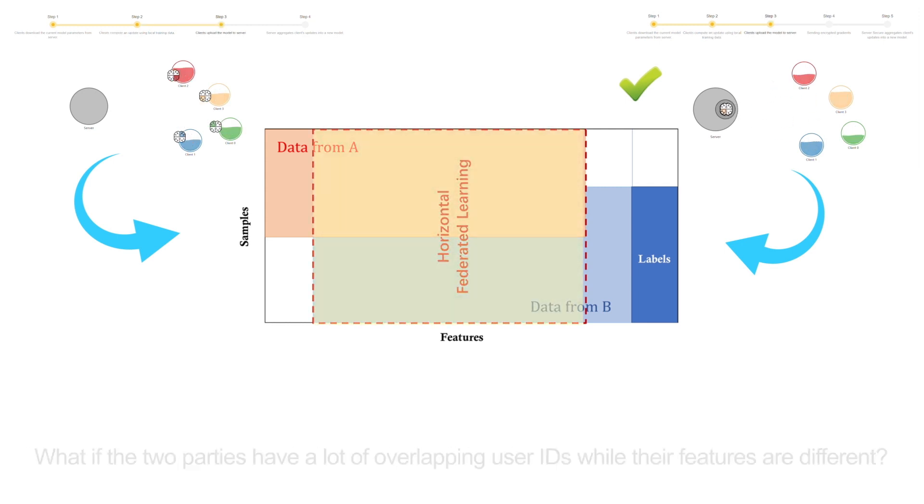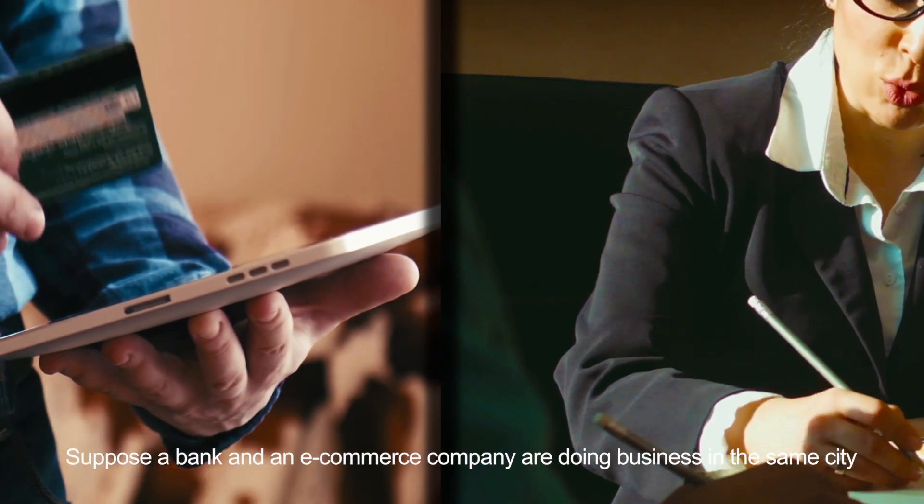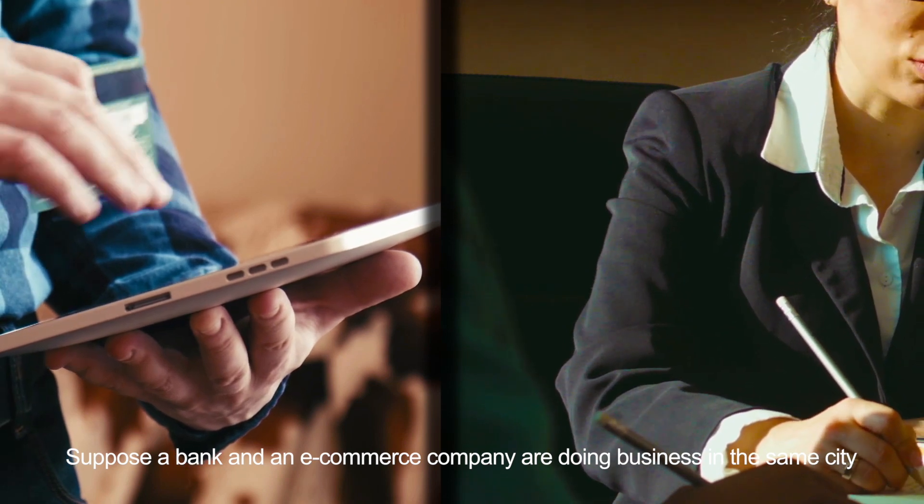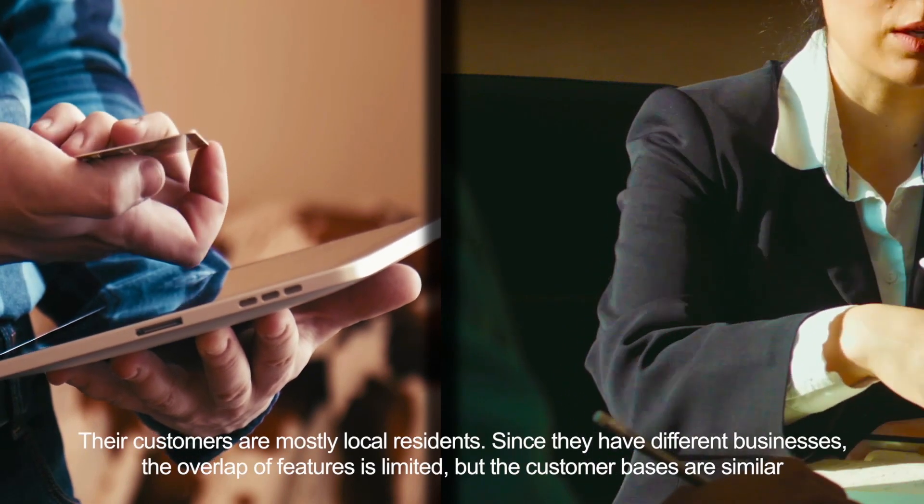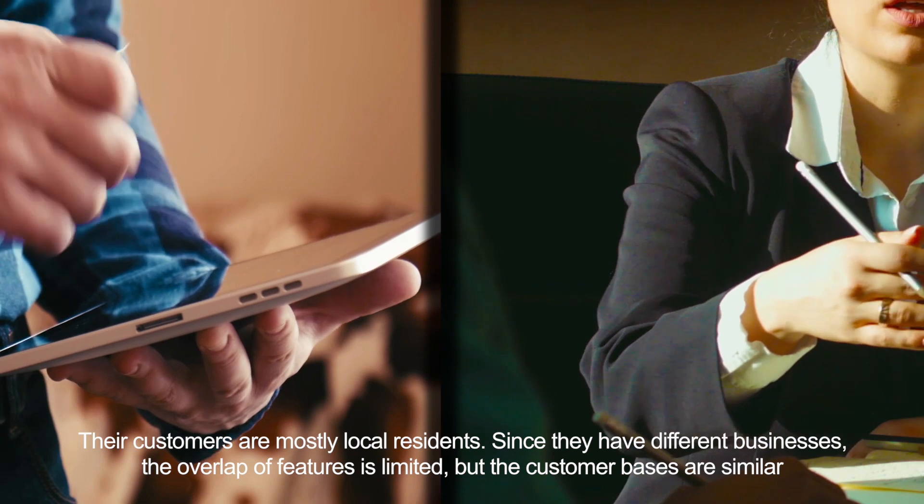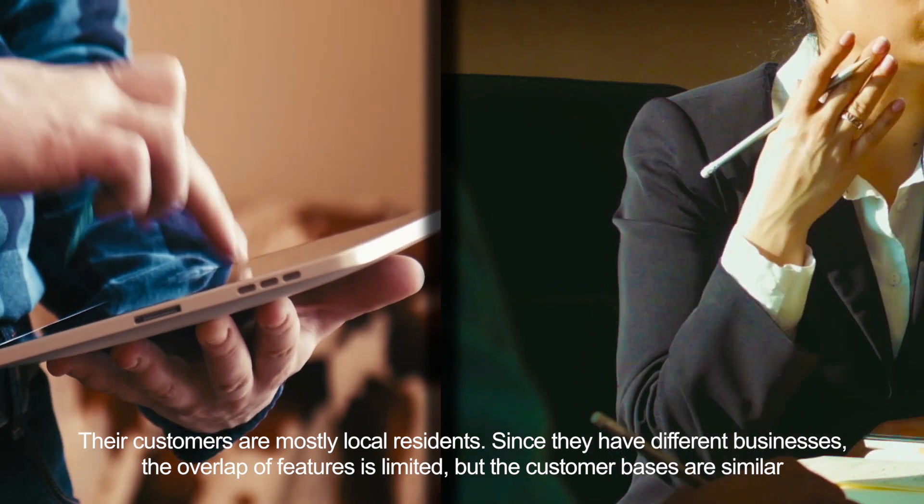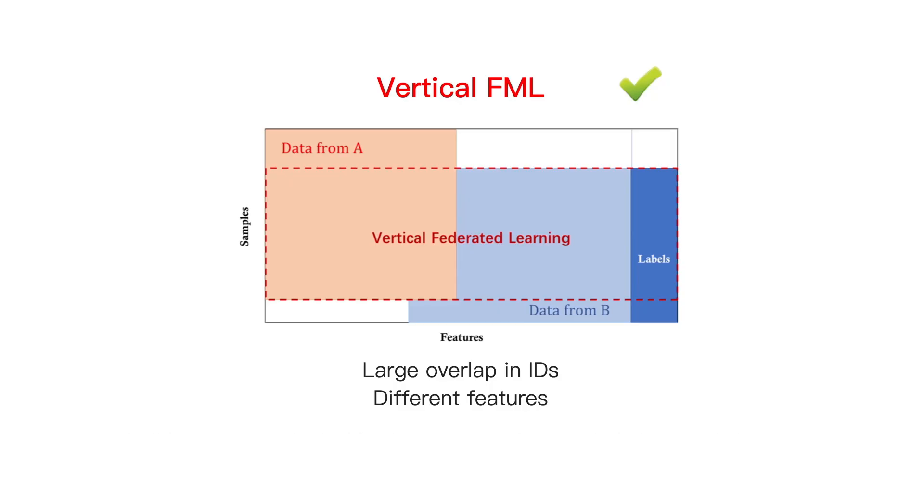What if the two parties have a lot of overlapping user IDs, while their features are different? Suppose a bank and an e-commerce company are doing business in the same city. Their customers are mostly local residents. Since they are different businesses, the overlap of features is limited, but customer bases are similar. In this scenario, Vertical Federated Learning can help them collaborate. It consists of two major steps.